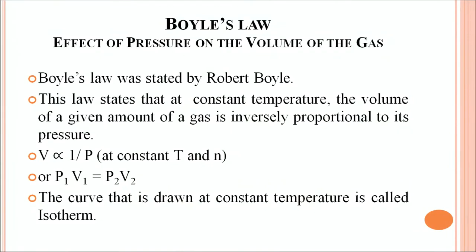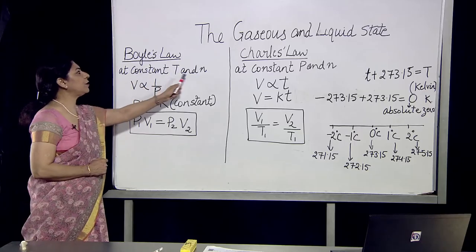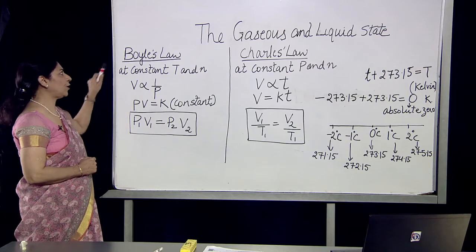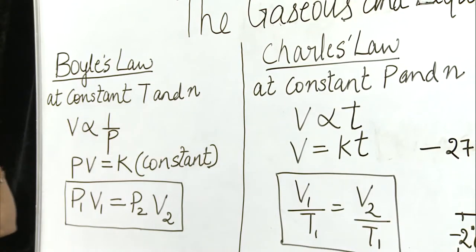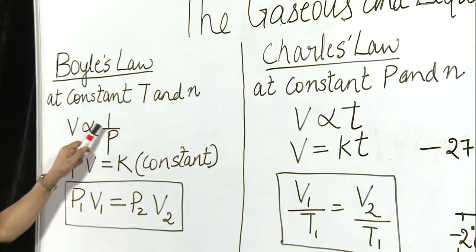Now let's discuss all the laws one by one. Boyle's law is the effect of pressure on the volume of a gas. Boyle's law was stated by Robert Boyle. This law states that at constant temperature, the volume of a given amount of a gas is inversely proportional to its pressure. Boyle kept temperature and number of moles constant, then checked the relation between volume and pressure and found that volume is inversely proportional to pressure.